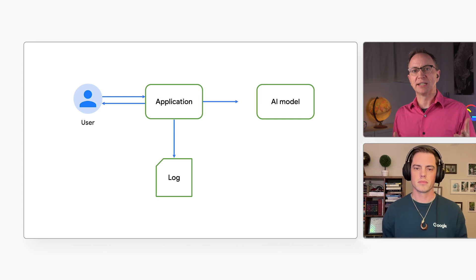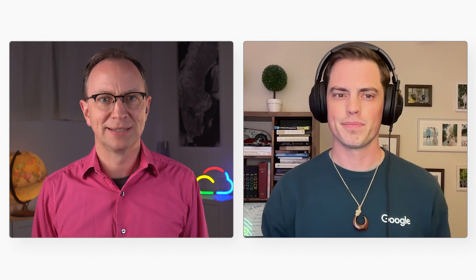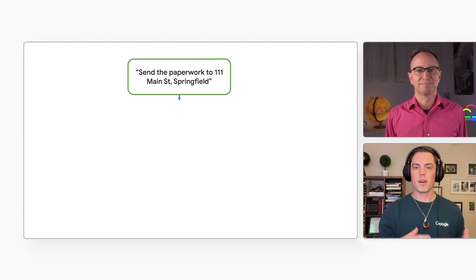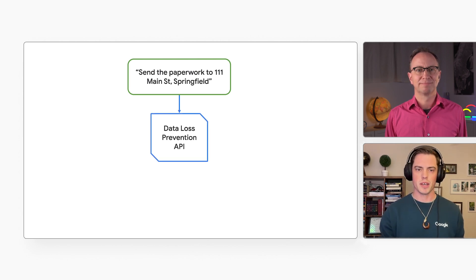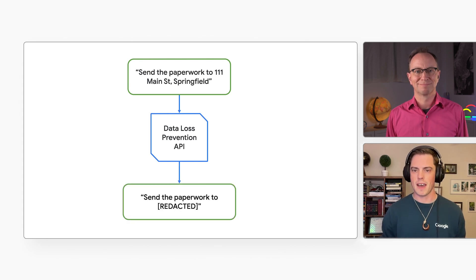The first data flow is data going to your AI model. If your AI model doesn't need a user's personal information to work, it's best to filter that kind of data out before it reaches the model. For example, if the user enters personal data in an application that answers questions about the employee handbook, we want to filter that out. Here's an example of a question that contains an address, and here's the same question with the address redacted by the Data Loss Prevention API.